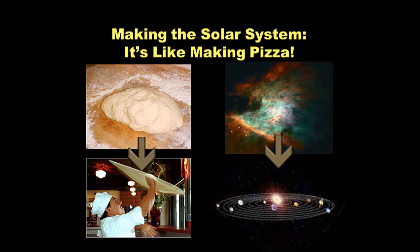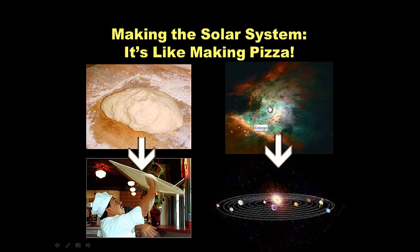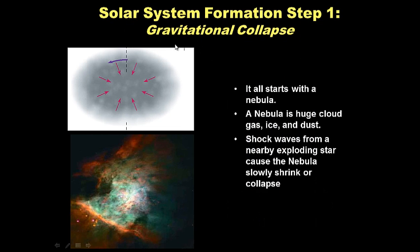Making the solar system is like making a pizza. If you've ever been to a pizza parlor, you've seen someone spinning the dough — when you spin that dough it becomes disk-shaped. That's kind of like what happens to our nebula: if we spin parts of the nebula, they become disk-shaped, just like our solar system. But first we have to collapse the nebula — we have to shrink it.